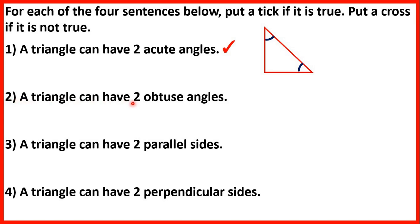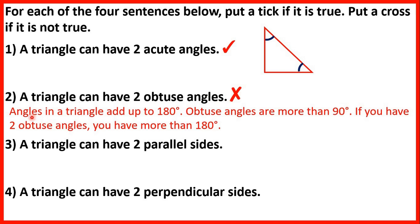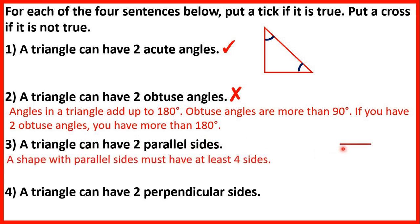Second: a triangle can have two obtuse angles. That's not true. Angles in a triangle add up to 180 degrees. Obtuse angles are more than 90 degrees, so if you have two obtuse angles, you have more than 180 degrees. Third: a triangle can have two parallel sides. Parallel sides are lines that would go on forever without ever crossing, but a shape with parallel sides must have at least four sides, so this statement is false.